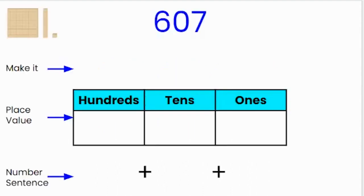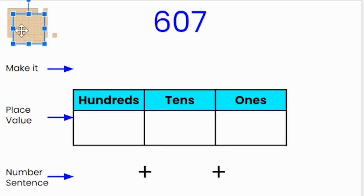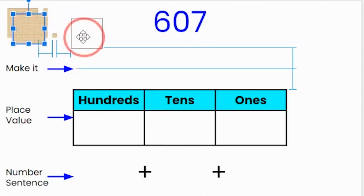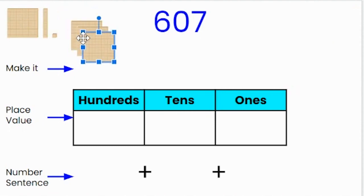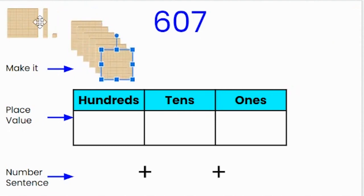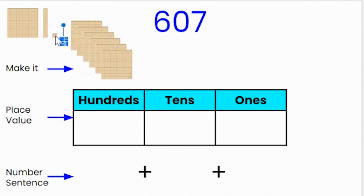Let's make the number. I know that there are six hundreds in the number six hundred and seven — one hundred, two hundred, three hundred, four hundred, five hundred, six hundred. There are zero tens and there are seven ones — one, two, three, four, five, six, seven ones.